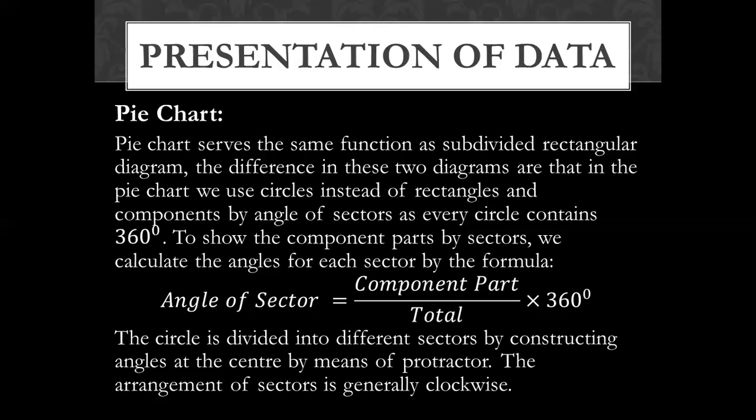We have to find the angle of the sector. The angle of sector equals the component part divided by the total, multiplied by 360 degrees. We will construct it in a circular shape using a protractor (D). We use angles to measure and plot the angle.